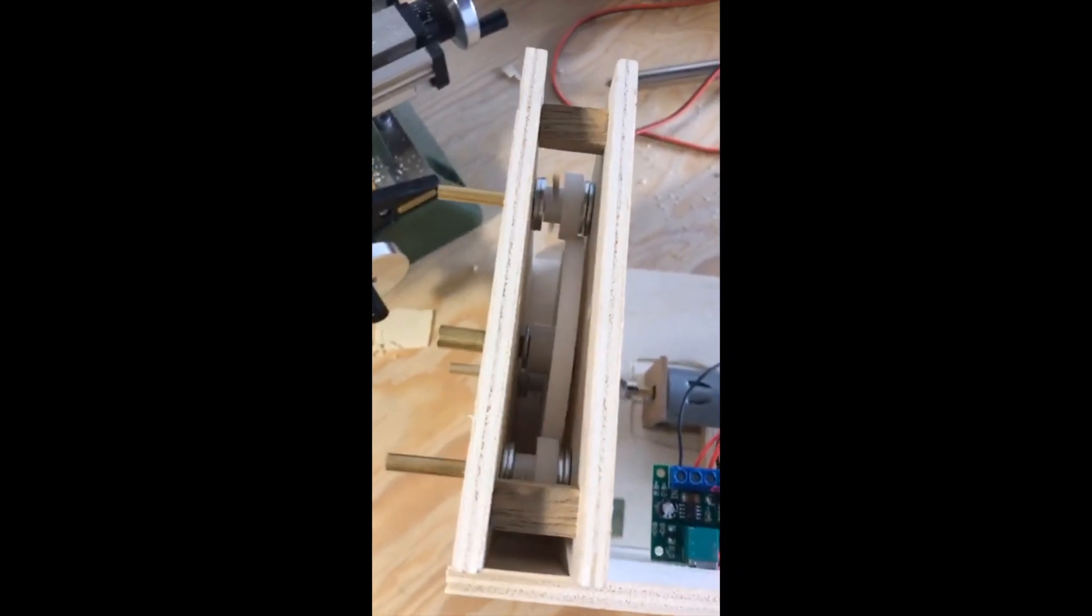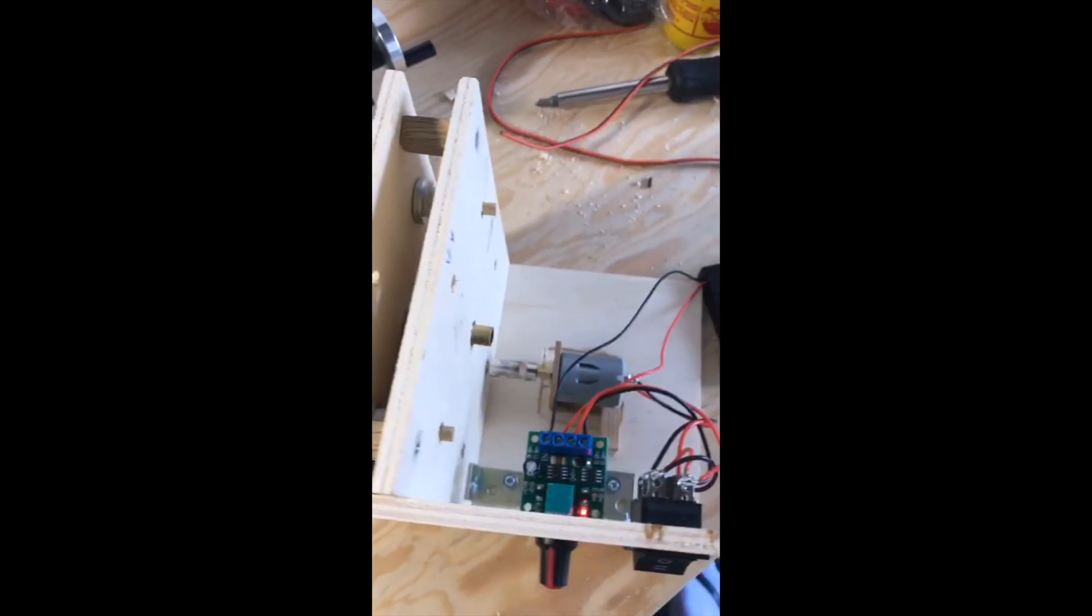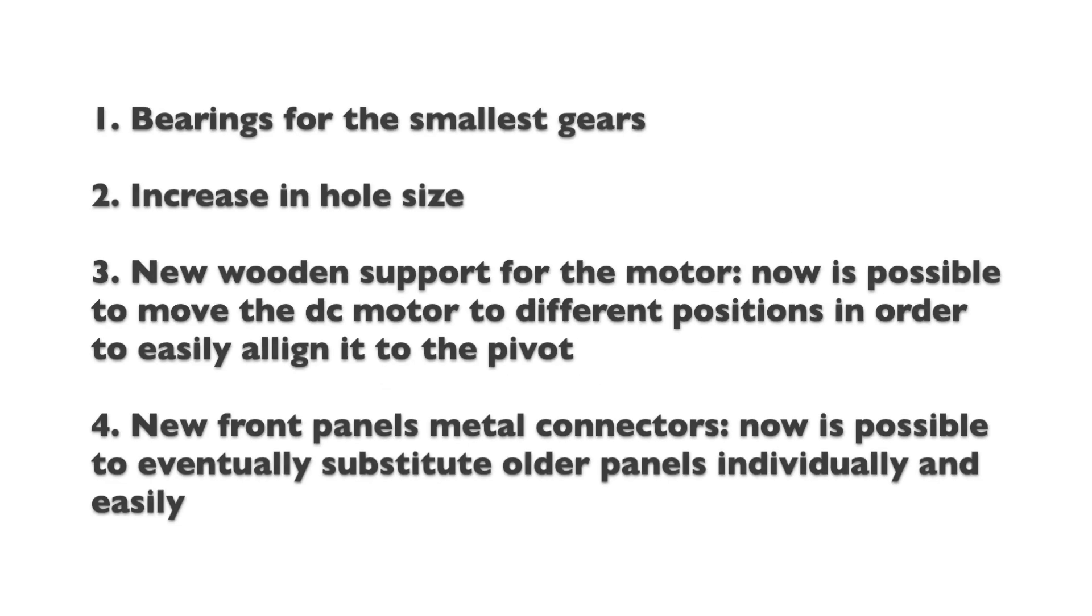To resolve this, I decided to make some changes. First, I found some small bearings on Amazon which would fit the smallest brass cylinders. For the big one, I decided to wait because I needed a specific bearing for that and it would cost a bit more than the others. I increased the hole size so that it could fit the bearings, even though I shouldn't have made them so big—you'll notice that later. The new wooden support and the front panel connectors are just for making things easier when assembling or disassembling the machine for new upgrades or maintenance. In a nutshell, I managed to reduce the friction by a lot, and this was my main goal for now.